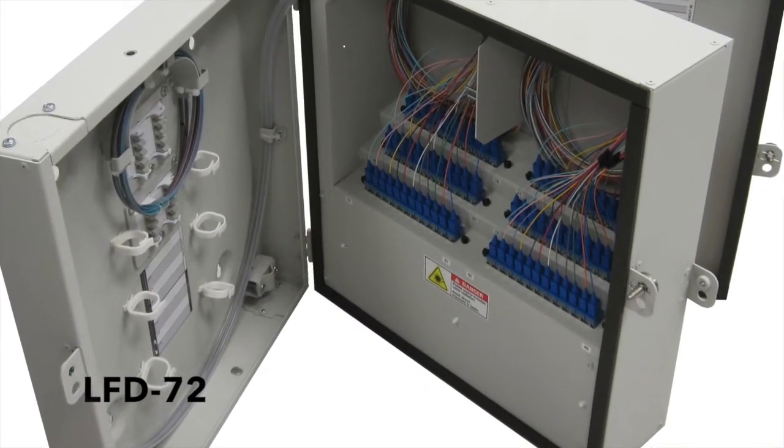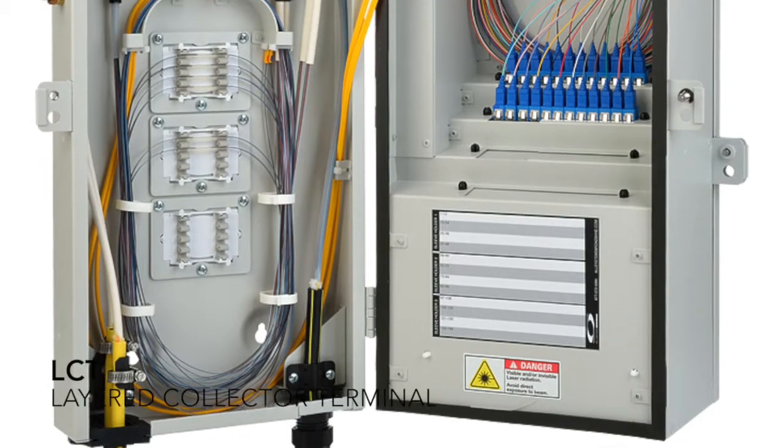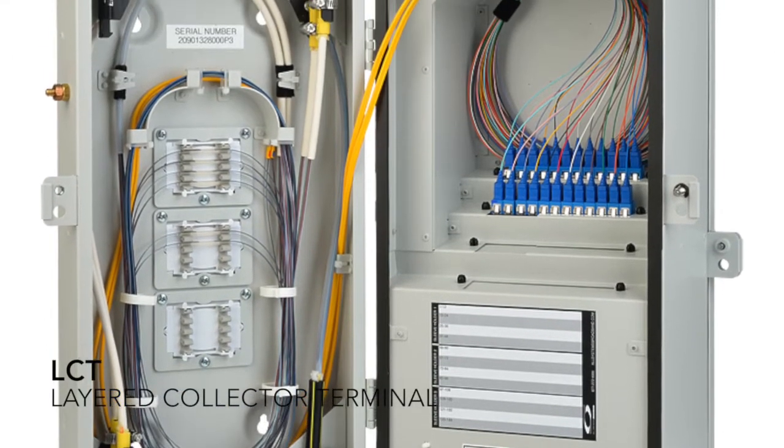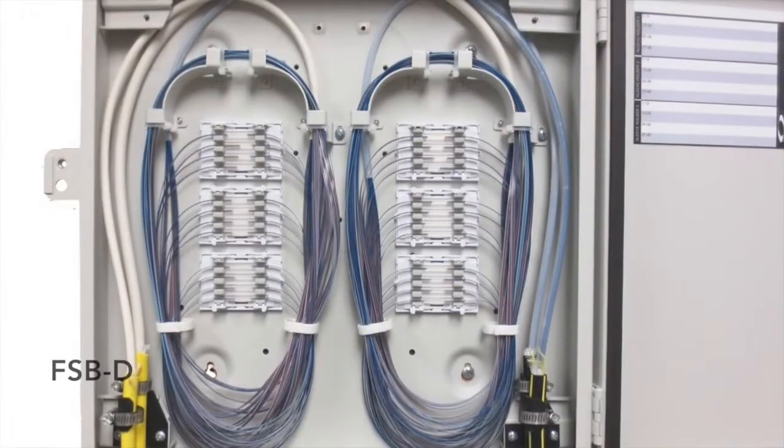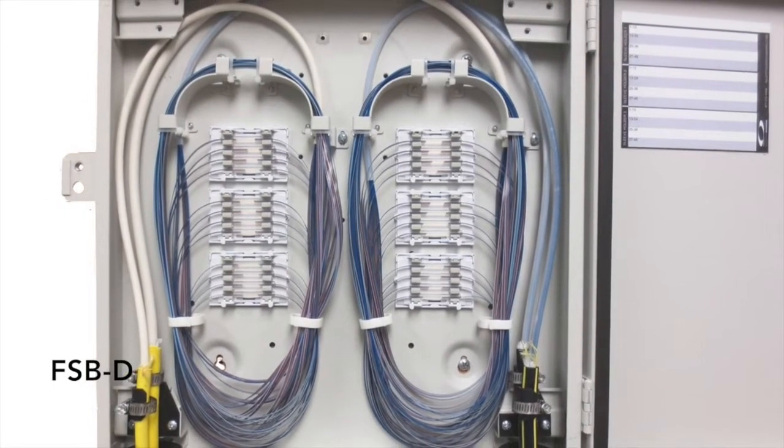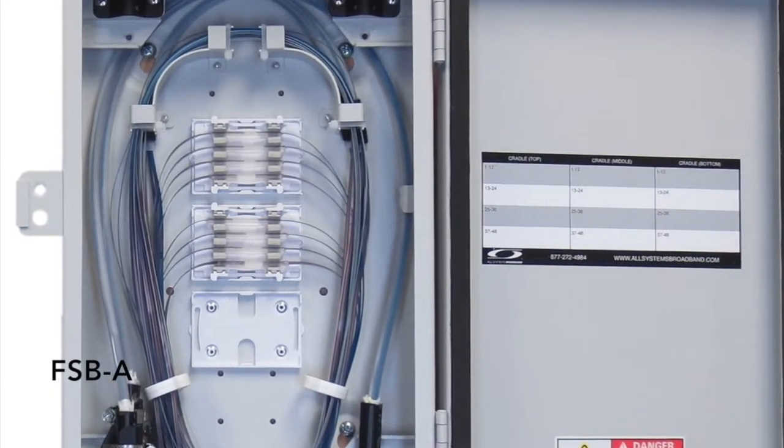We also have a collector version for a different application with more cables coming in, but the same basic layout with our ribbons. We also have fiber splice boxes, sometimes called FSTs. That's actually what we're going to show today - we've got two sizes of this box, an A and a D.